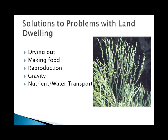When plants started dealing with drying out, they developed a waxy cuticle and stomata that helped to open and close to regulate transpiration. We'll talk about that more in the next lecture. For making food, land plants started to form leaves, which are broad surfaces to increase the surface area for more photosynthesis to take place.